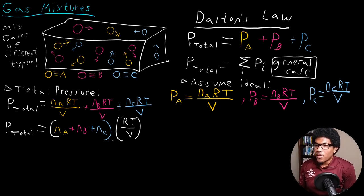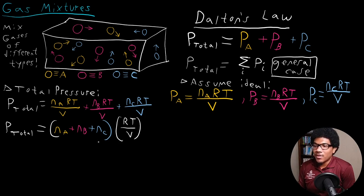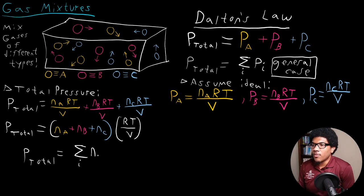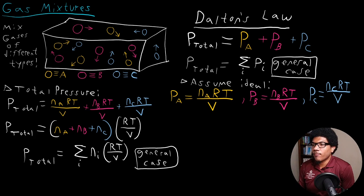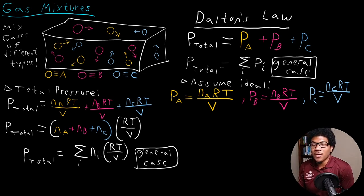In the general case, P_total is equal to the sum of the number of moles times RT over V — that gives us total pressure for any number of components using Dalton's Law, specifically for an ideal gas.